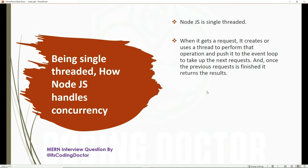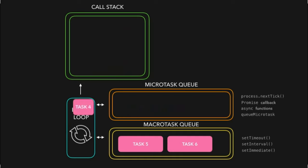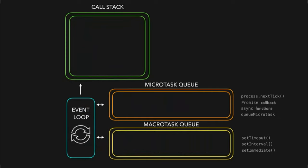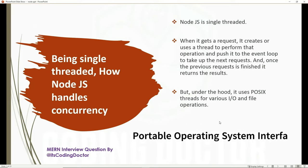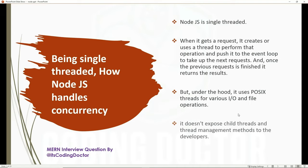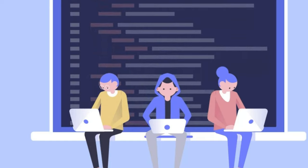When Node gets a request, it creates or uses a thread to perform the operation and pushes it to the event loop to take up the next requests. Once the previous request is finished, it returns the results. Under the hood, it uses worker threads for various input-output and file operations. An interesting thing about Node.js is it does not expose the child threads and thread management methods to the developers.